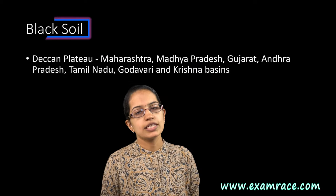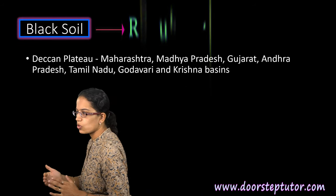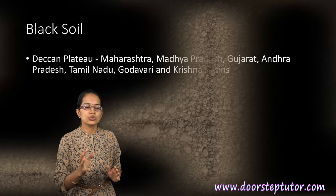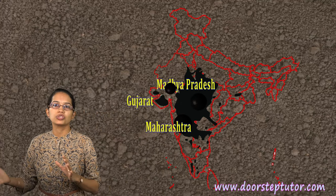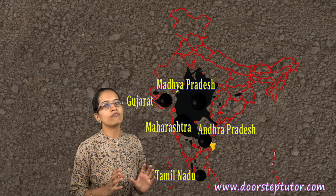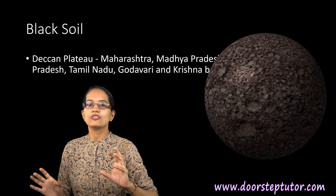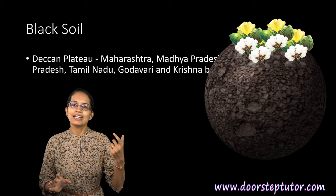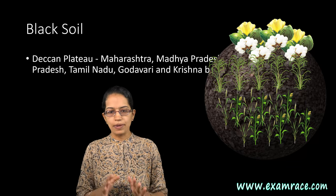The next important soil is black soil, also known as regur soil. It is usually seen in peninsular India, in the Deccan Plateau area. It covers the states of Maharashtra, Madhya Pradesh, Gujarat, Andhra Pradesh, Tamil Nadu, and the deltaic regions of Godavari and Krishna. Cotton grows very well in black soil; sugarcane and jowar are other good crops grown in black soil.